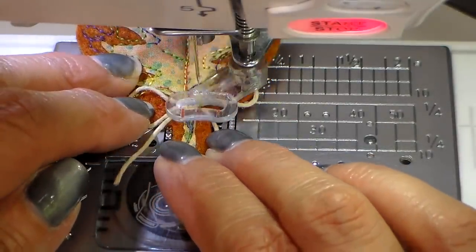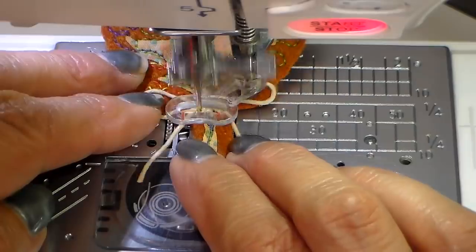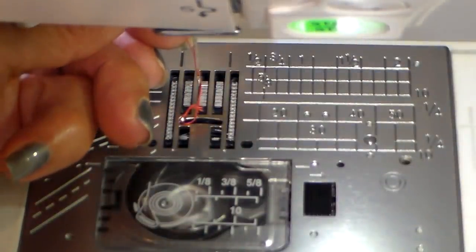I use my free motion foot and I do a stitch on either side of that knot. I do not go through the knot. I just catch either side of it.